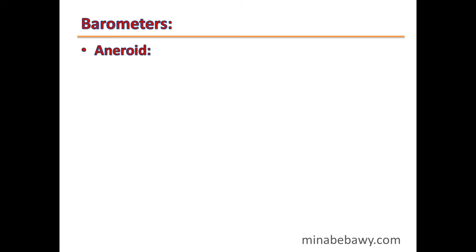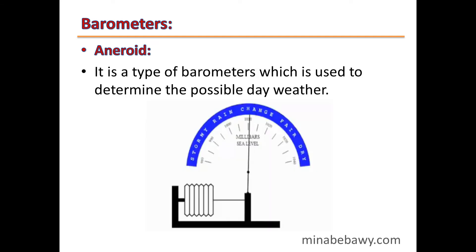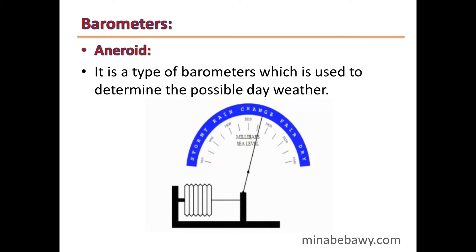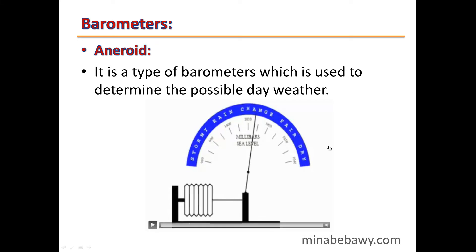There are many types of barometers; we will study two. The first type is the aneroid barometer, which is used to determine the possible day weather according to the change in pressure. Its reading changes from Stormy to Rain to Change to Fair or Dry — these are the weather conditions it indicates.